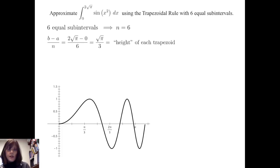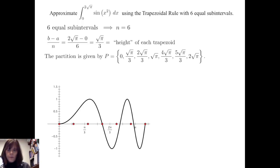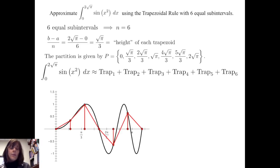We will proceed with the trapezoidal rule with six equal subintervals. With n equal to 6, the height of each trapezoid is (b minus a) over n, which equals √π over 3. This gives us the partition indicated along the x-axis on the graph. We will approximate the definite integral from 0 to 2√π of sine of x squared dx by summing the areas of those six trapezoids.